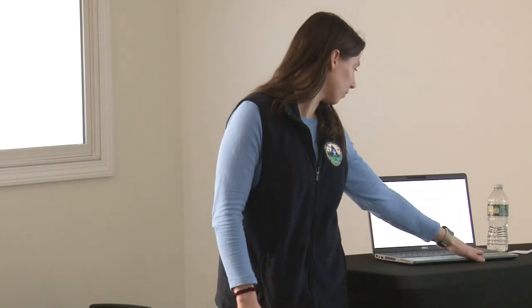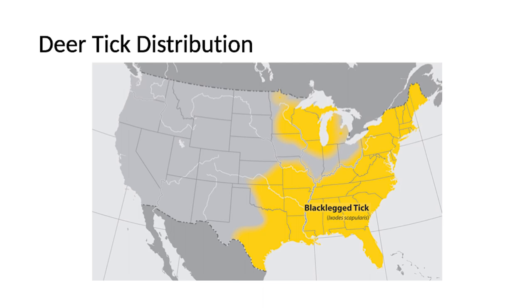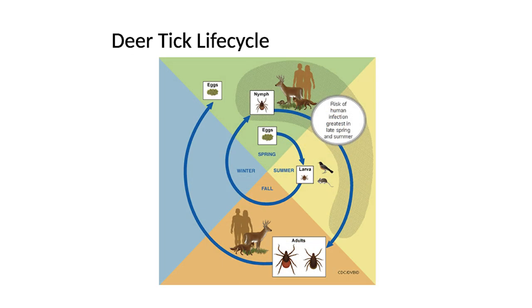So looking at the distribution map — it's pretty much all the East Coast. Deer ticks have a very complicated life cycle. When it's below freezing they will not be active, but as soon as it's above freezing they can be active and searching for food. Just because it's below freezing doesn't mean that they're not there — they're just reserving their energy, resting while it's cold. They're very slow because they're cold-blooded. So right now they can still be out there.